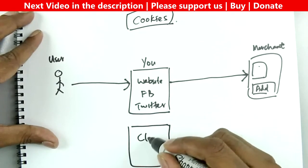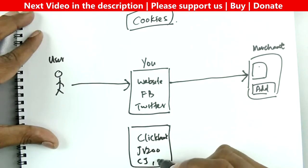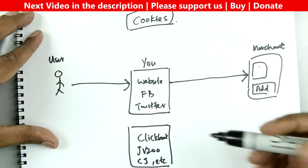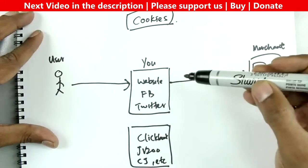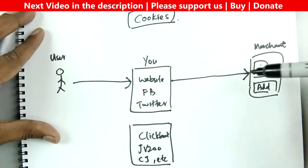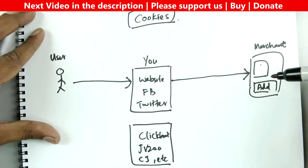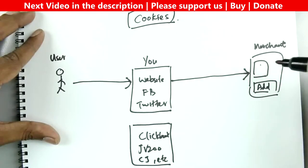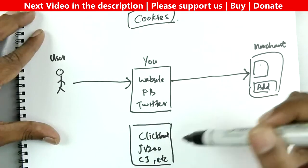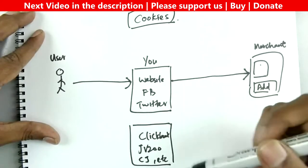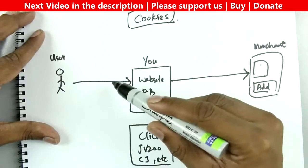With affiliate marketing you need a third-party tracking system - that's where the affiliate platform comes in. Affiliate platforms include ClickBank, JVZoo, CJ, and many others. Instead of sending traffic directly to the merchant site, you get an affiliate link for the exact same product from these affiliate networks, which merchants have listed their products on.